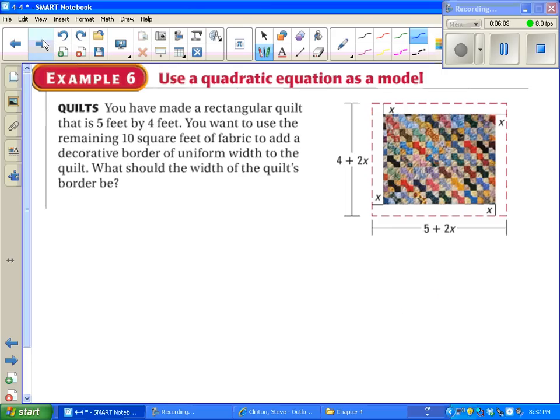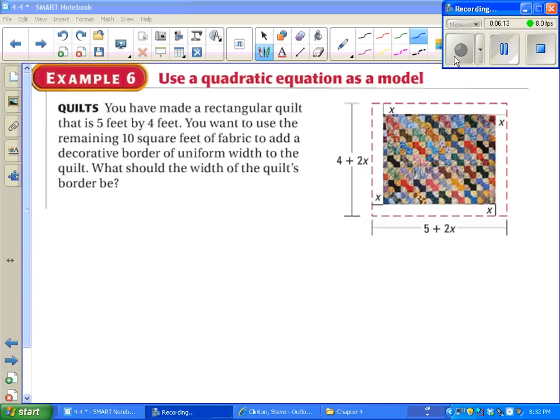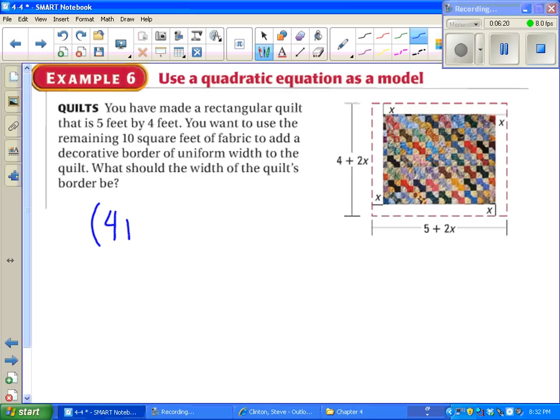At this point, go ahead and pause the video and try to figure out what to do on this one. Looks like we've got a quilt that we want to add an extra little strip to around the outside. Our new dimensions are going to be 4 plus 2x times 5 plus 2x. And that's going to equal our original dimensions, which was a 5 by 4. That was 20 square feet. And we want to add 10 square feet to that, so we can just say plus 10. At this point, we need to solve this whole thing.